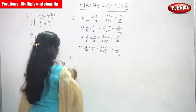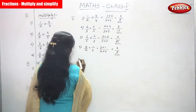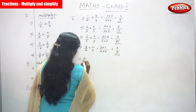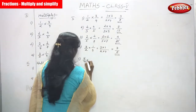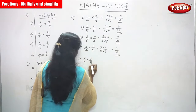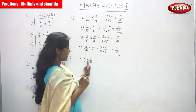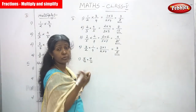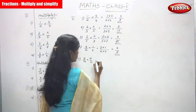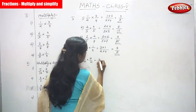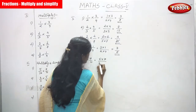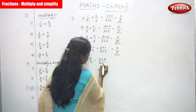Look at the sum now. We have 5/12 multiplied by 7/10. 5/12 is a fraction and 7/10 is also a fraction — both are proper fractions. We are going to solve the problem: 5 × 7 divided by 12 × 10.